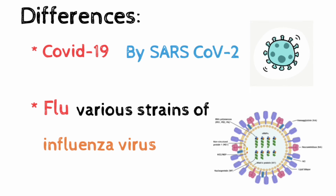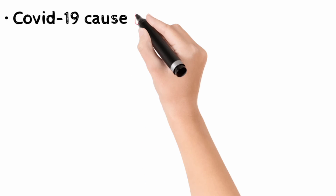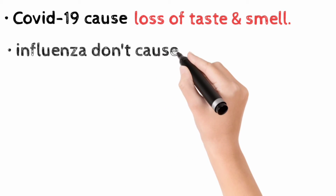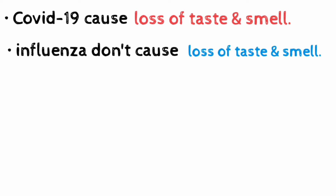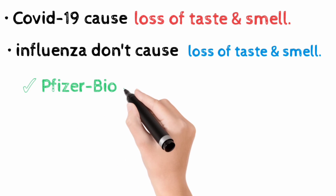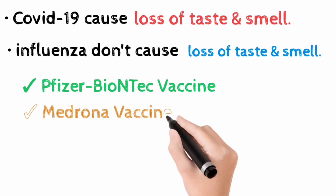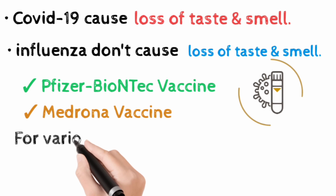A main symptom of COVID-19 that differentiates it from flu is loss of taste or smell — flu does not cause loss of taste or smell. The FDA gave emergency authorization for two COVID vaccines: number one, Pfizer-BioNTech vaccine, and number two, Moderna vaccine. Influenza vaccines are also available and effective to prevent some of the most dangerous types of flu or to reduce the severity of flu.